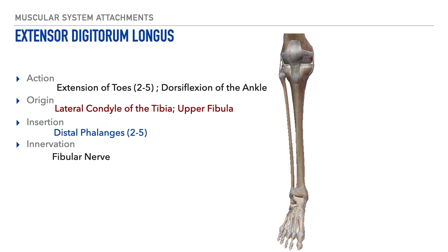The next muscle is called the extensor digitorum longus. Based on the name, we get an idea of its action — extension — and where it attaches, which is on the digits of the foot, and that it is relatively long. The action is extension of toes two through five and it also assists with dorsiflexion of the ankle. Its origin is on the lateral condyle of the tibia and upper portion of the fibula. Its insertion is on the distal phalanges of digits two through five, and its innervation is from the fibular nerve.